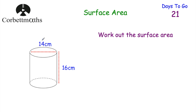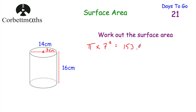Now I'd like you to have a go yourself. Here we've got a cylinder — can you find the total surface area? For the top circle: the diameter is 14 centimetres, so the radius is 7 centimetres. π × 7² = 49π, or as a decimal 153.9380 centimetres squared. That's the top and also the bottom — we'll use that value twice.